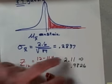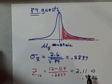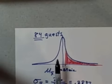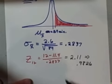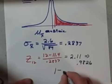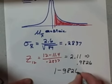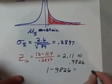But once again, this gives me the total area to the left of the curve, so I want the area to the right of the curve. I always have to do one additional step—I have to subtract this to find the complement. 1 minus 0.9826 equals...